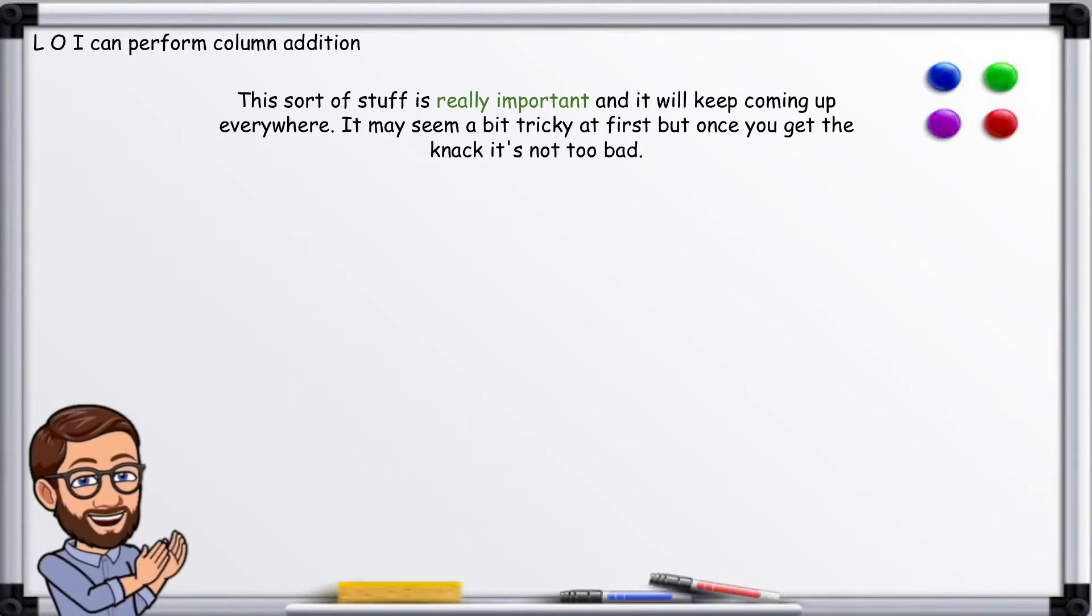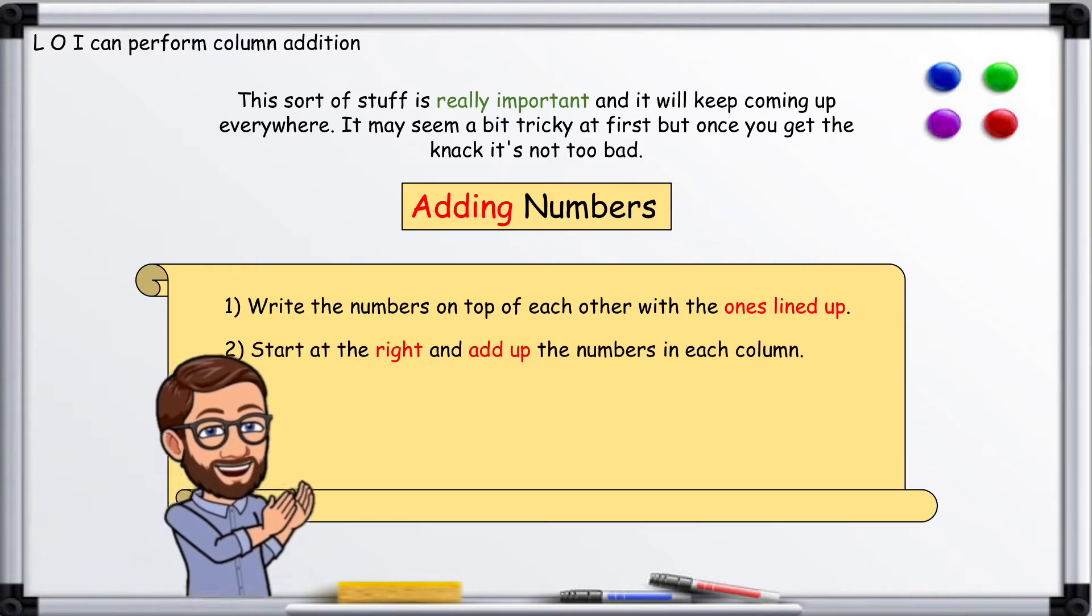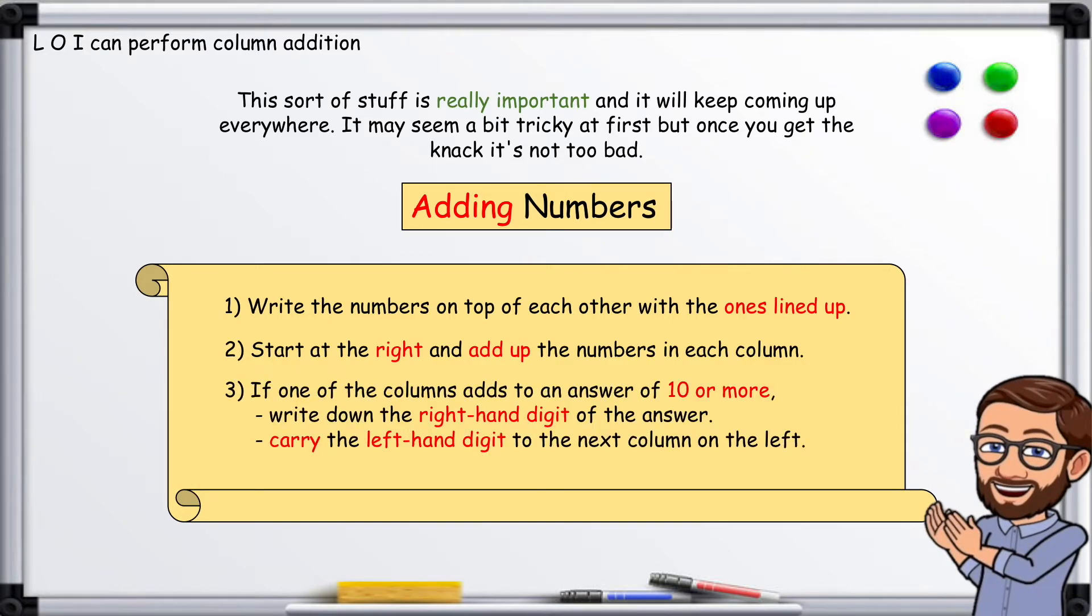Adding numbers: write the numbers on top of each other with the ones lined up. Start at the right and add up the numbers in each column. If one of the columns adds to an answer of 10 or more, write down the right-hand digit of the answer and carry the left-hand digit to the next column on the left.